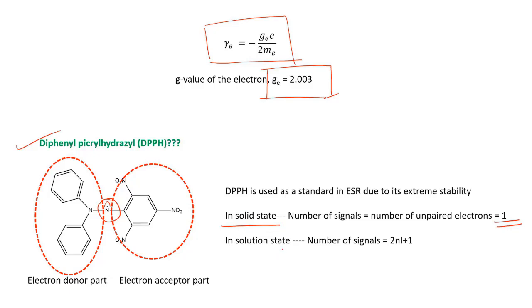But in solution state, since the effect of solvent comes into play, the number of signals equals 2ni+1. Here, n is the number of equivalent nuclei—two equivalent nitrogen nuclei are there. So 2×2×i, where i is the nuclear spin of nitrogen, which is 1. So 2×2×1+1 equals 5.